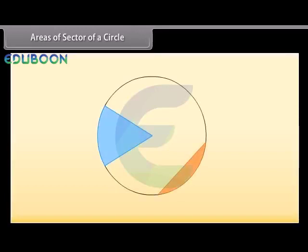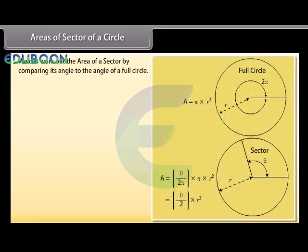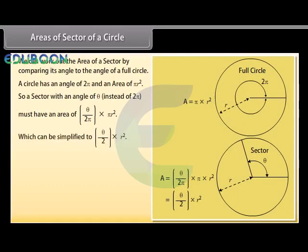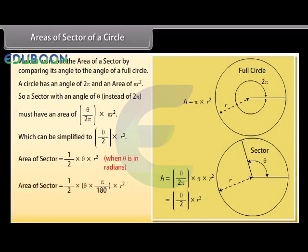There are two main slices of a circle. The pizza slice is called a sector, and the slice made by a chord is called a segment. We can work out the area of a sector by comparing its angle to the angle of a full circle. A circle has an angle of 2π and an area of πr². So a sector with angle θ has an area of (θ/2π) × πr², simplified to (θ/2)r². Area of sector = ½ × θ × r² when θ is in radians, or ½ × θ × (π/180) × r² when θ is in degrees.